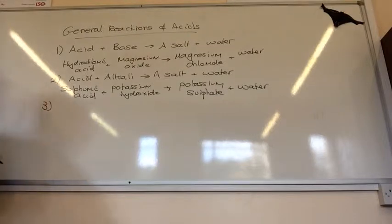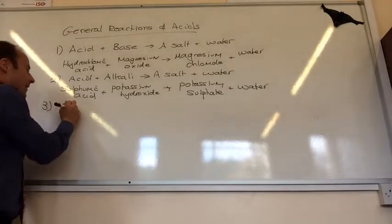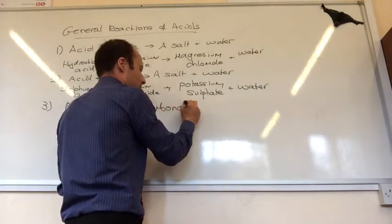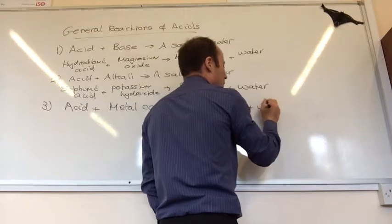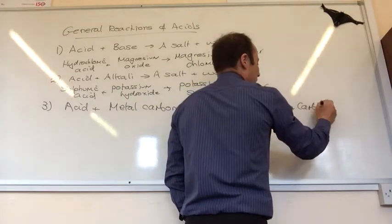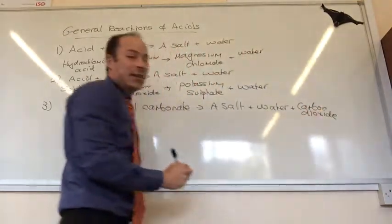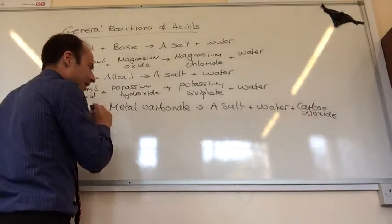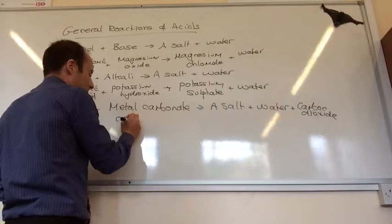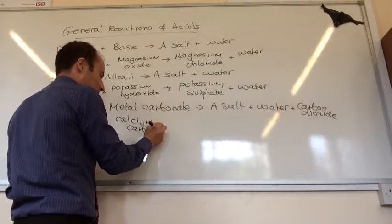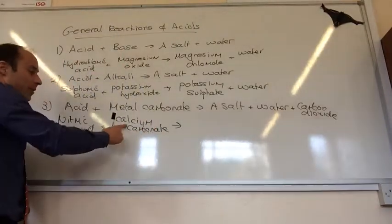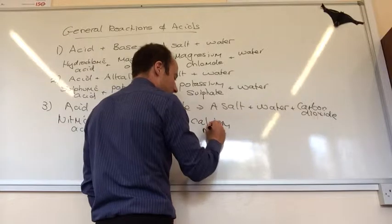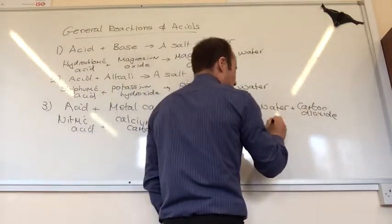The third one that you need is acid plus metal carbonate. This one again gives me a salt and water, but I get an additional carbon dioxide as well. An example of that, let's use nitric acid this time. My metal carbonate, I'll go for calcium carbonate. That's going to give me my salt. First part of the name comes from the carbonate, so it's calcium. Second part comes from the acid, so it's nitrate. Plus water, plus carbon dioxide.